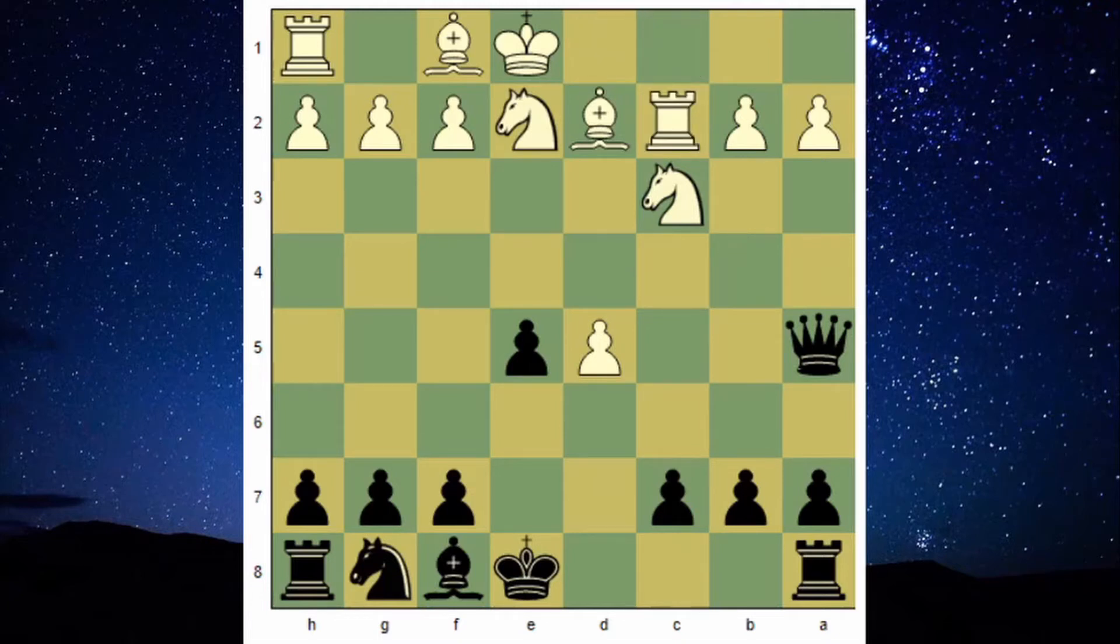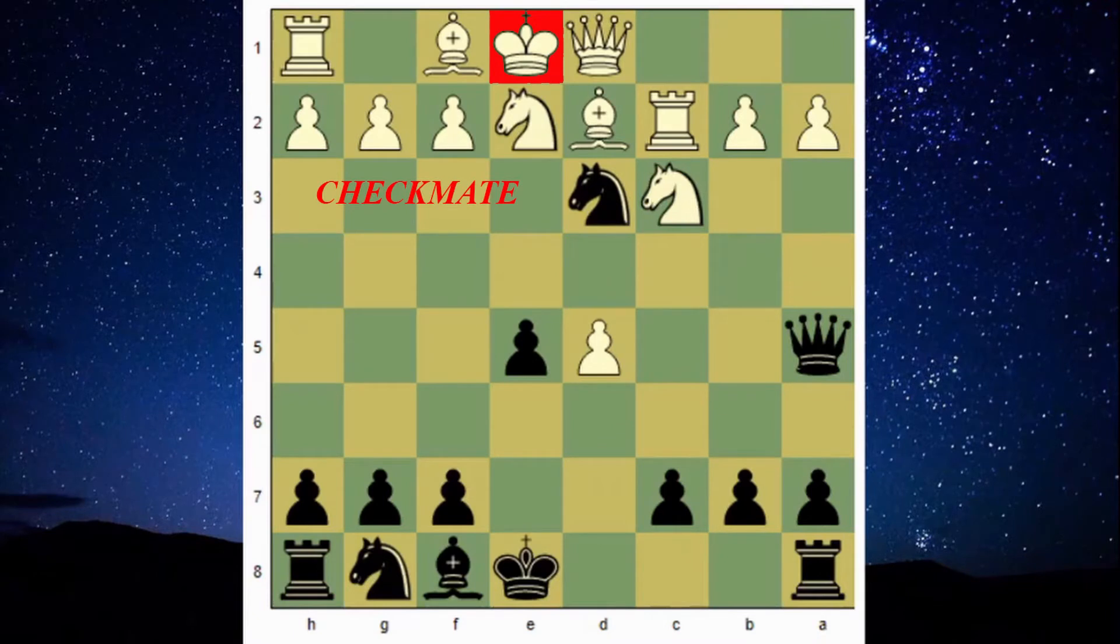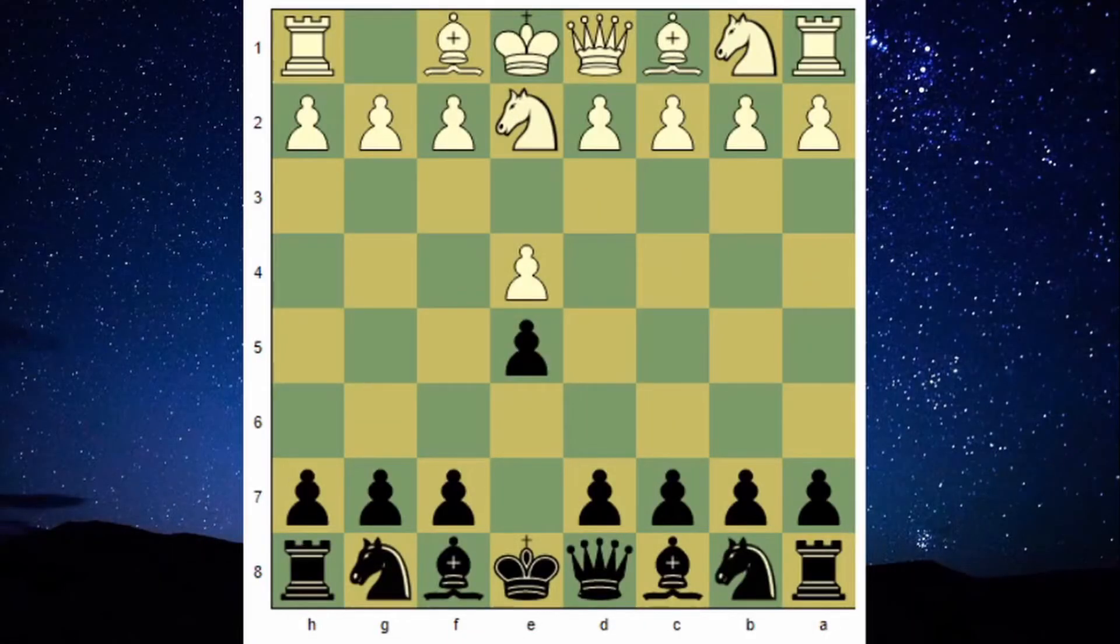In this position, white has to give off his queen in exchange of knight and bishop or will be checkmated. So if rook captures the bishop, then knight to d3 is checkmate.